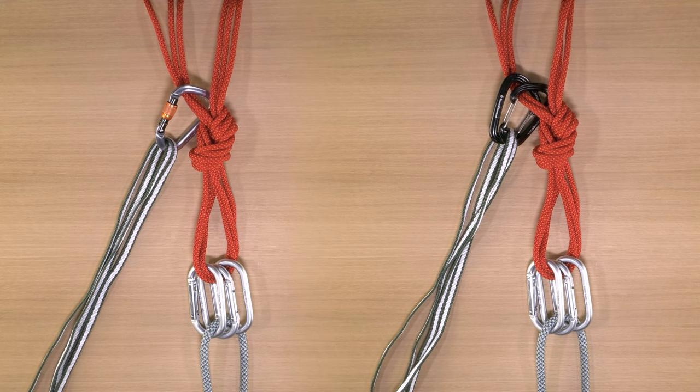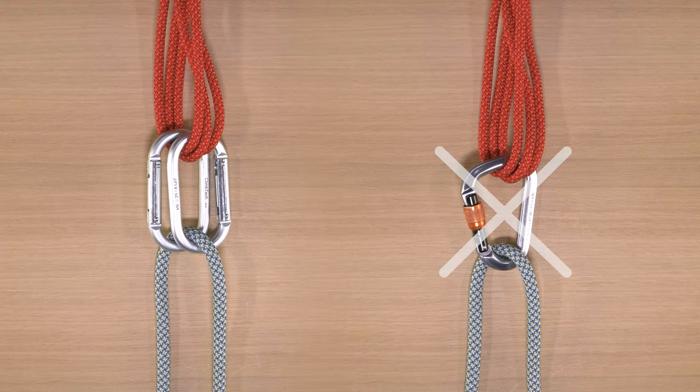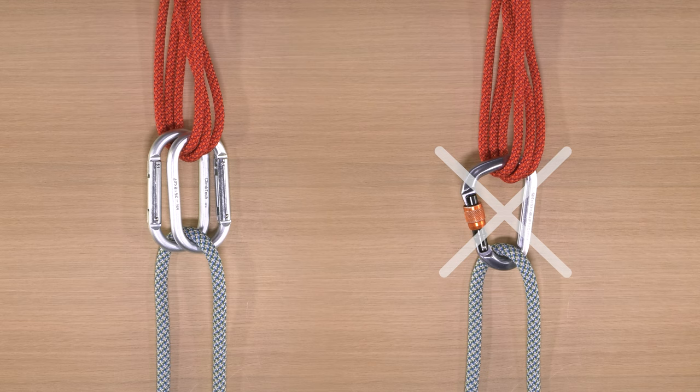Note that for other applications, such as tethering, you would normally use a single locker, but you can substitute two opposite and opposed non-lockers. However, at the master point of a top rope anchor, where you would normally use two or three non-lockers, you cannot substitute a single locking carabiner. To be properly redundant, you need at least two carabiners there.